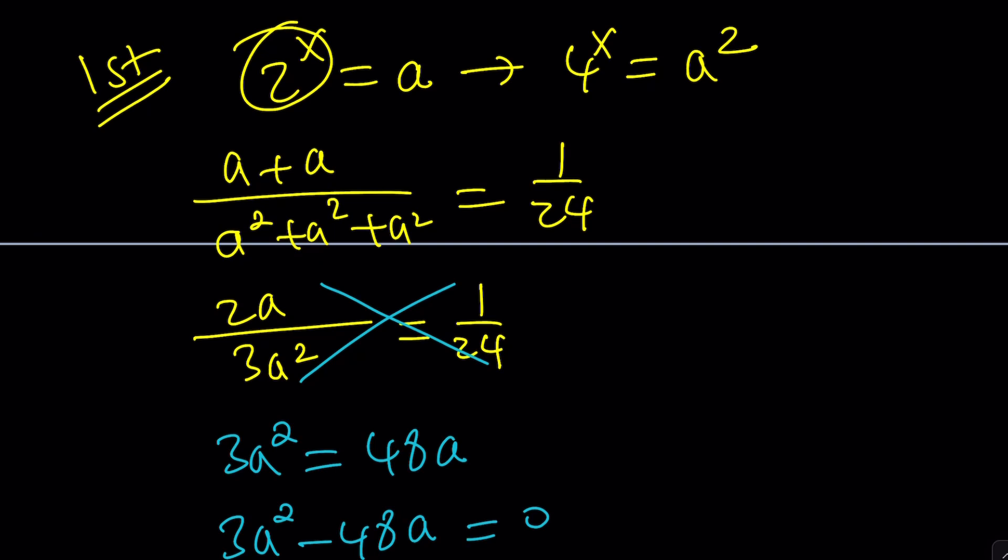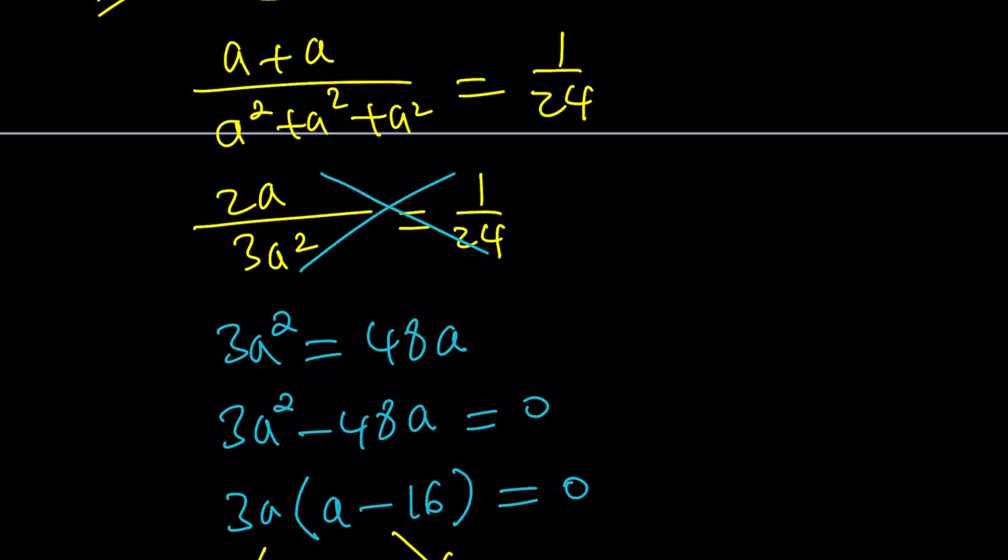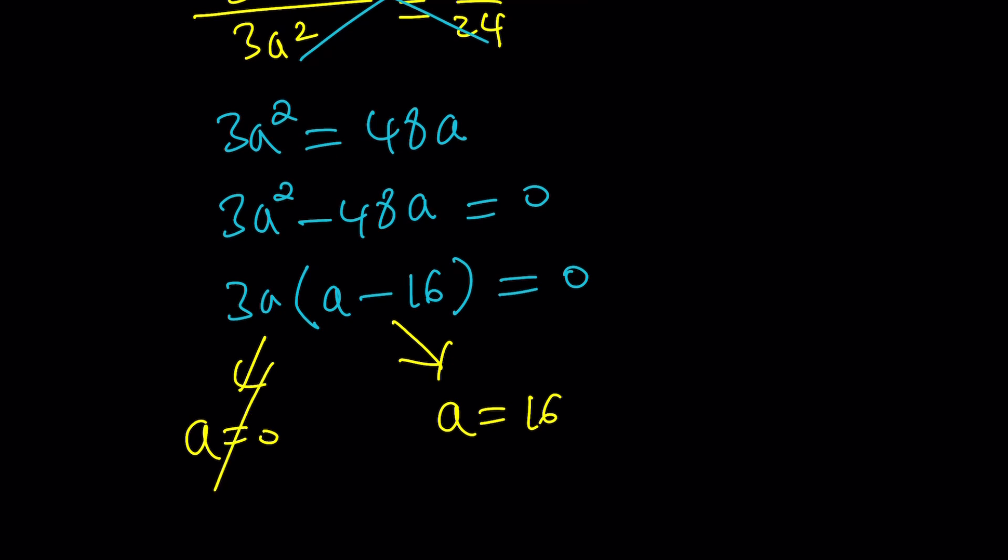Why not? Because two reasons. 2^x cannot be 0. Because x needs to be negative infinity. That's not going to work. Second reason. We have a in the denominator. You can't divide by 0. And 0/0 is even worse, right? Which one is worse? What do you think? 1/0 or 0/0? Anyways. That's a different story. But a = 0 must be rejected.